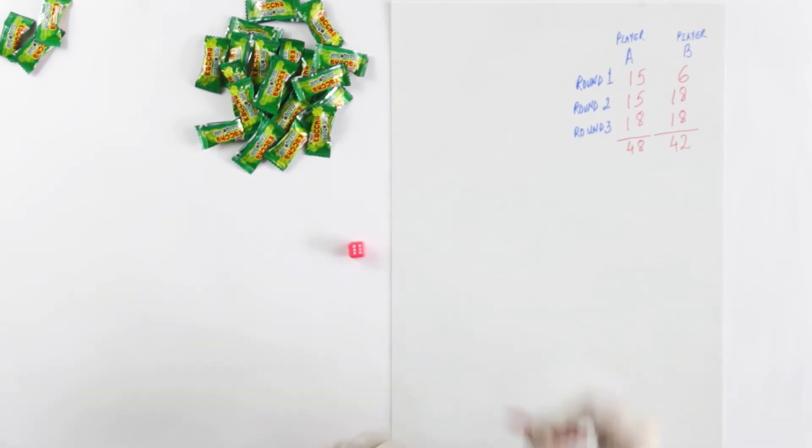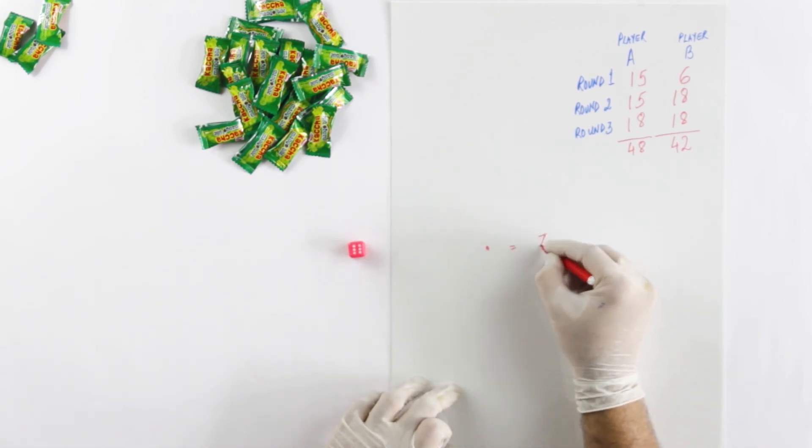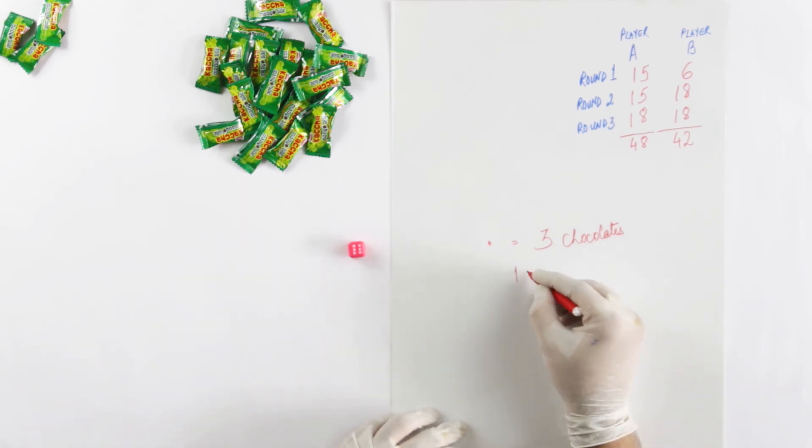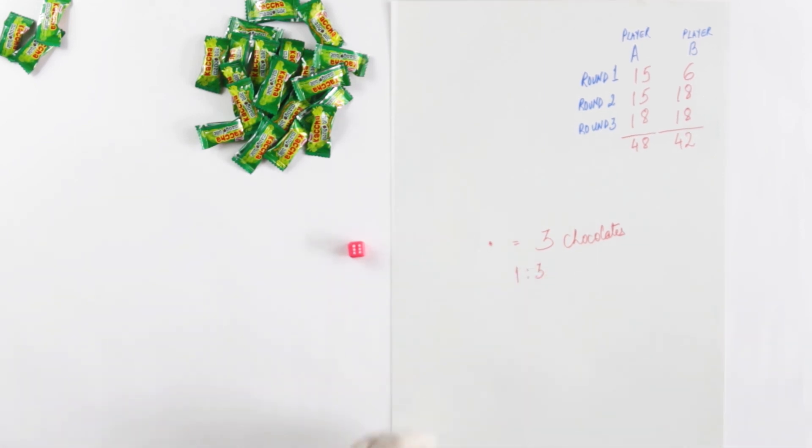And what we have understood is 1 dot on the dice is equal to 3 chocolates. This is the proportion 1 to 3. Hope you enjoyed this, thank you.